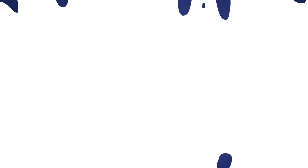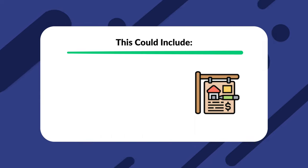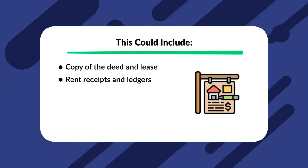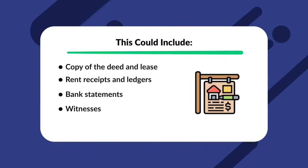If the tenant disagreed and replied: in the state of New Hampshire, a reply from the tenant is necessary for a court date to be scheduled. It is held 10 days after the tenant files for an appearance in court. The landlord needs to support the claim with evidence, which could include a copy of the deed and lease, rent receipts and ledgers, bank statements, witnesses, and photo and video documentation of the violations. If the judge rules in favor of the tenant, the landlord has seven days to appeal the ruling, and vice versa. However, in cases about non-payment of rent, the tenant and the landlord have the option to settle their issues outside of court. If landlord and tenant come to an agreement before a writ of possession is issued, then the entire process is stopped.